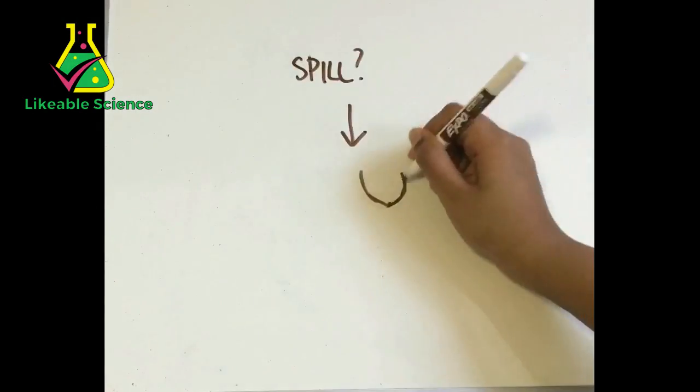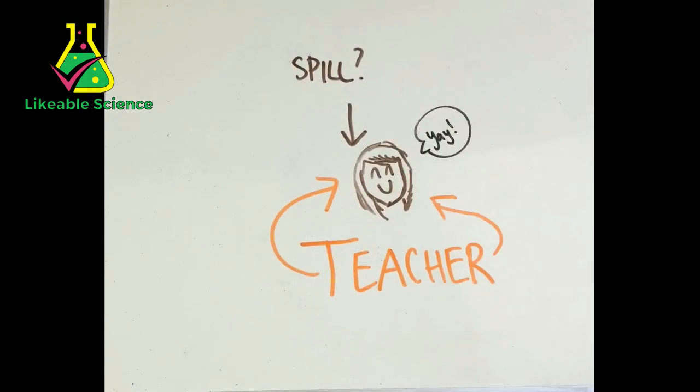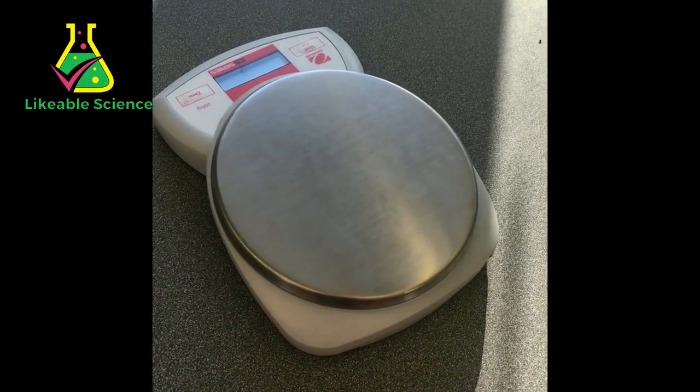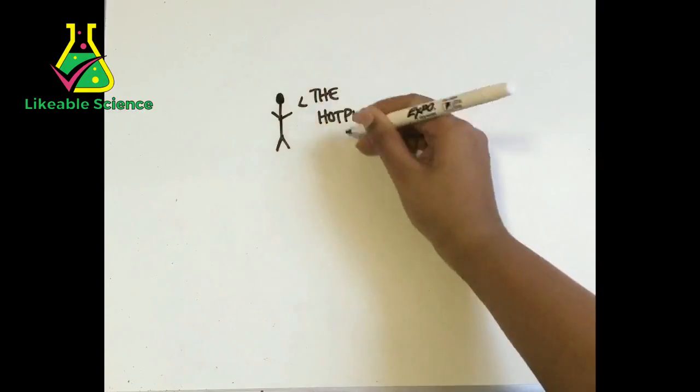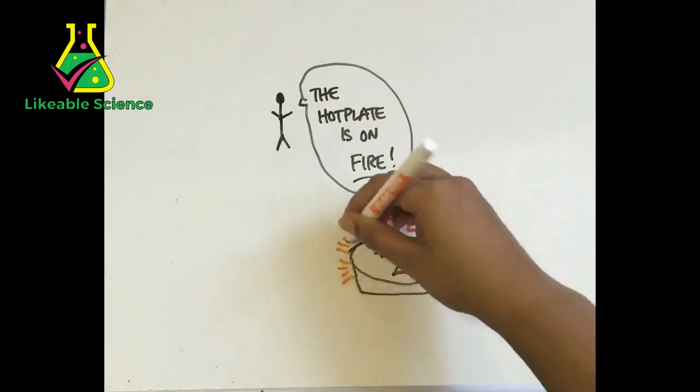When handling chemicals, don't touch, taste or smell. And if something spills, your teacher is the one you should tell. Always turn off a hot plate if it's not in use, because if it causes a fire, you have absolutely no excuse.